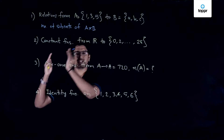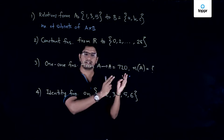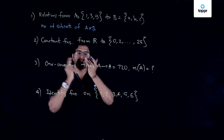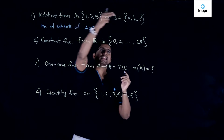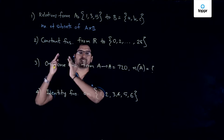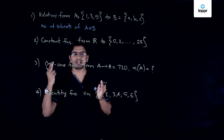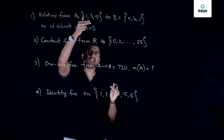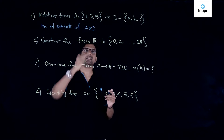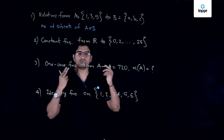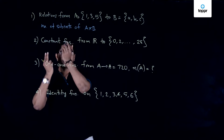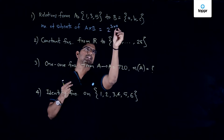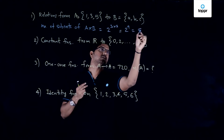When there are two sets, one containing m elements and the other containing n elements, A cross B contains m times n elements. Here it is 3 times 3, which equals 9. Further, if a set contains n elements, the total number of subsets is 2 to the power n. Therefore, the number of relations is 2 to the power 9, which equals 512.